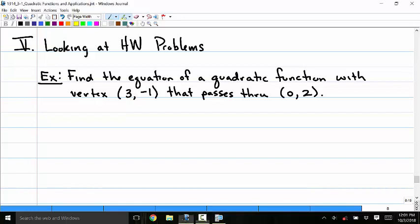It tells you the vertex, so I would look at the vertex form first: Y equals A times (X minus H) squared plus K.